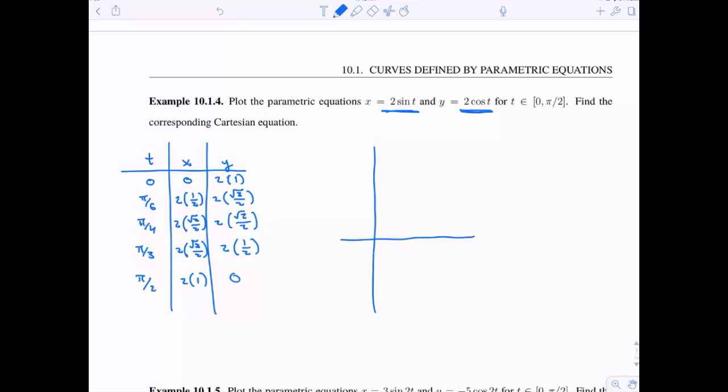Now let's go ahead and plot these on my Cartesian coordinate axes. So it looks like the biggest x value I get is 2. The biggest y value I get is 2. So here's a good plot. So my first point is 0, 2.